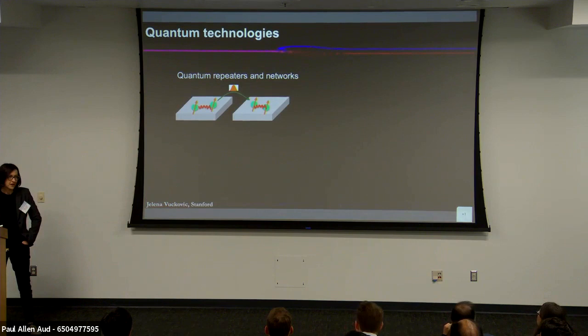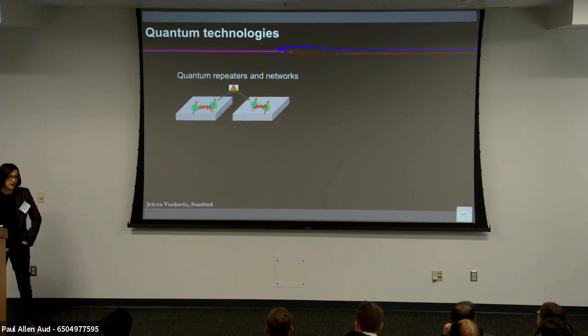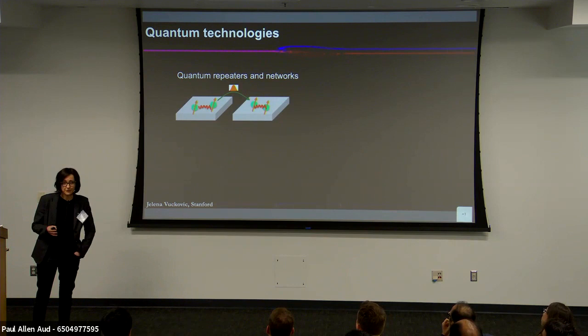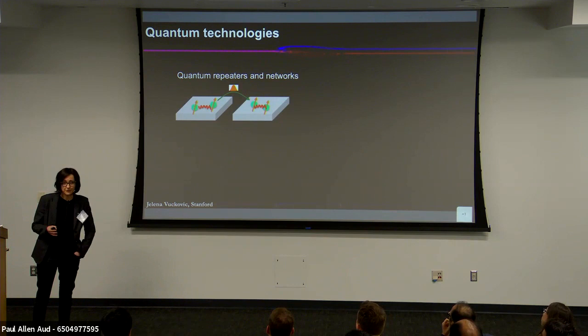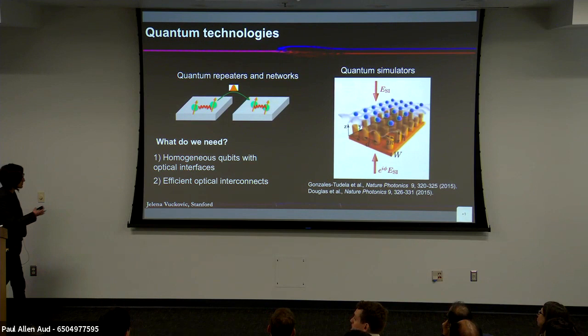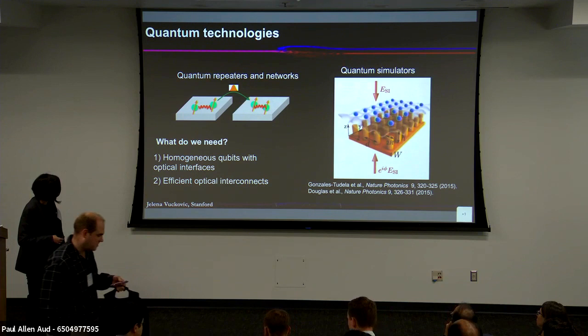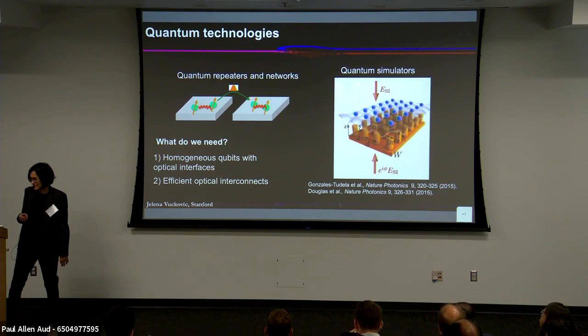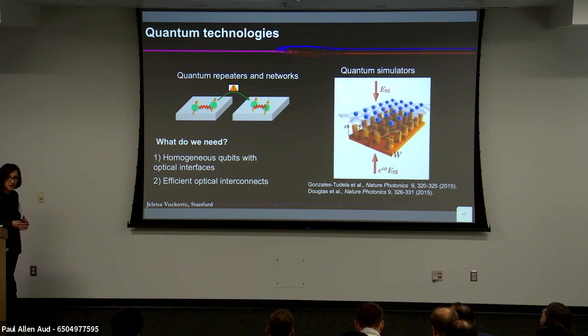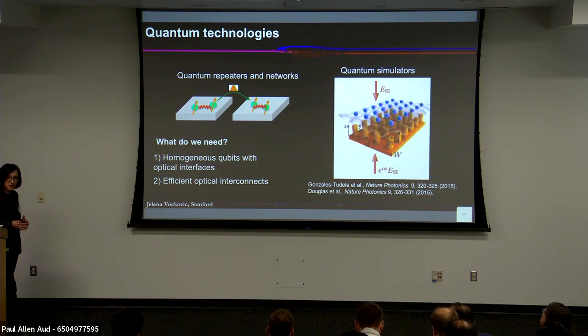There is a lot of excitement in building quantum technologies and scalable quantum systems — quantum networks, quantum repeaters, quantum simulators, quantum computers. You need basically homogeneous qubits with good optical interfaces, or microwave interfaces in the case of Josephson junctions. You also need efficient optical or microwave connections, because you don't want to lose information along the way, which degrades fidelity and reduces scalability. So I'll talk about our search for homogeneous qubits with optical interfaces and efficient optical interconnects.